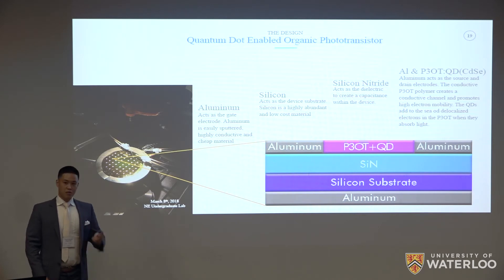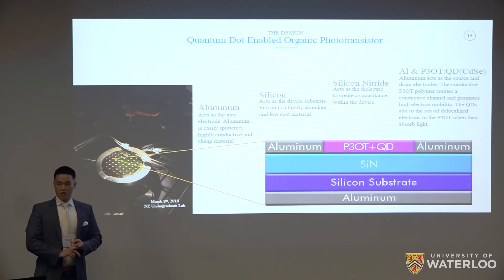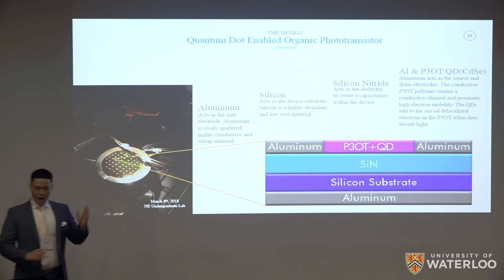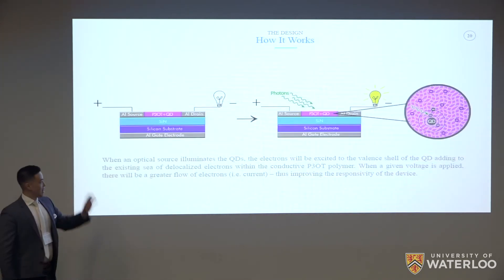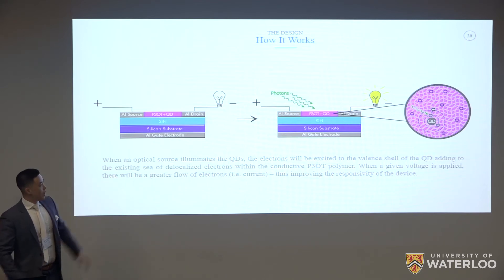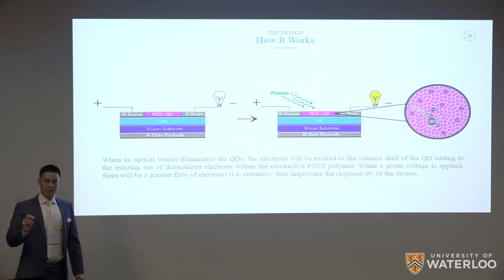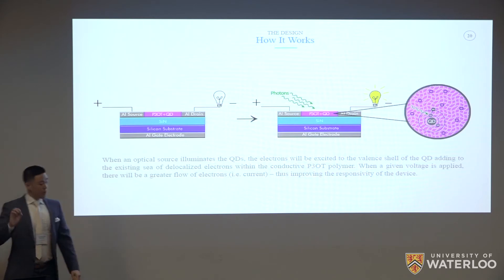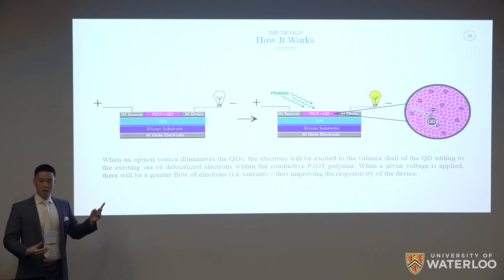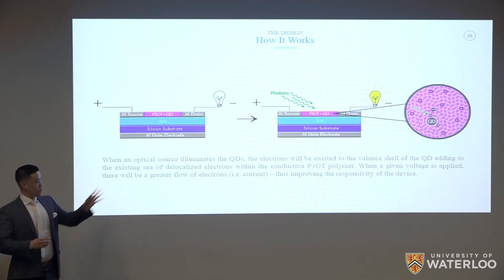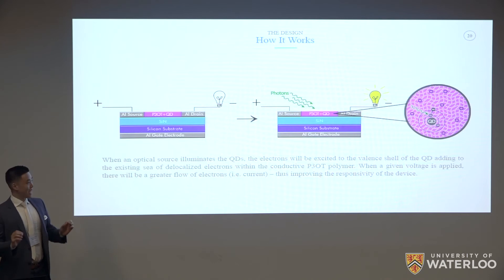We leverage two things in that blend: the conductive properties of the P3OT polymer, and the charge carrier-generating characteristics of the quantum dot. When photons of a certain wavelength illuminate the channel, the electrons in the quantum dots get excited to the valence shell. This adds more electrons to the delocalized sea of electrons that already exist in the polymer matrix — essentially a dopant, but a light-sensitive dopant. More electrons means more current, but only when illuminated.